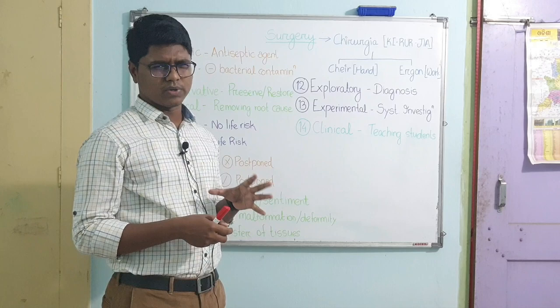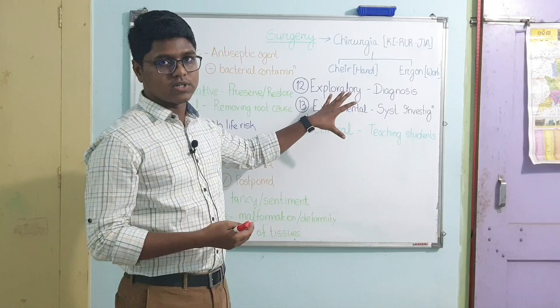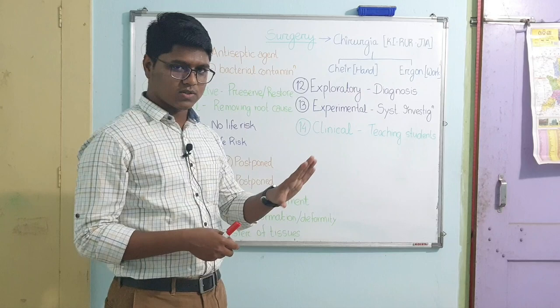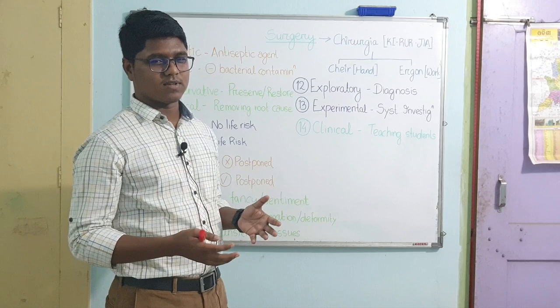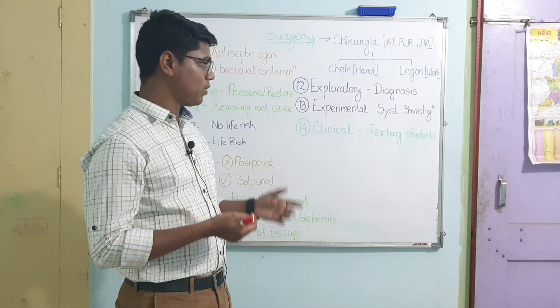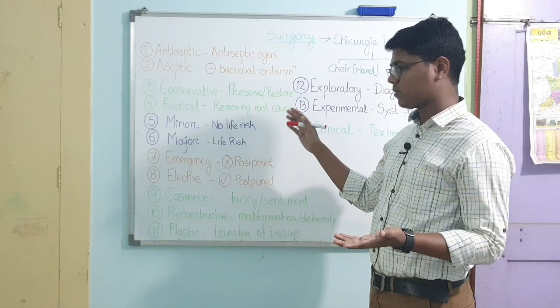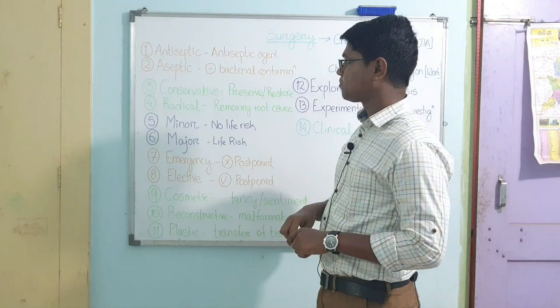Remember, I won't advise you to memorize book definitions. Understand what is meant — suppose this is exploratory surgery, understand what exploratory surgery is and write in your own terms. Don't go for exact bookish terms; if you are going for rote words then that won't help you. Understand what it is and you will remember it and can write in your own words. These are either types of surgery or branches of surgery — I have used color coding for remembering.